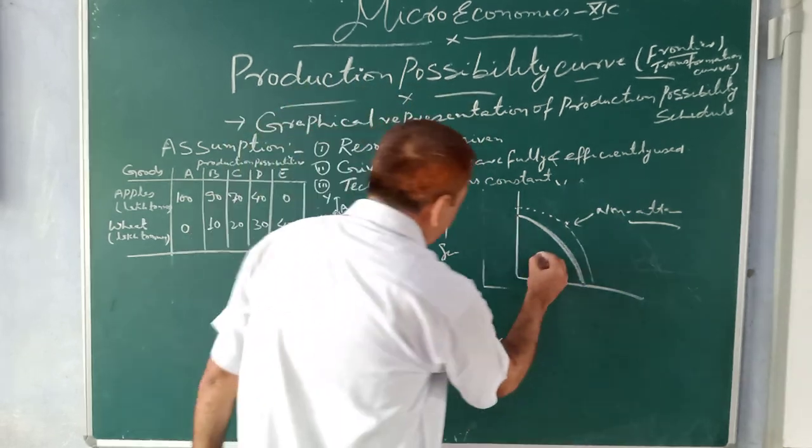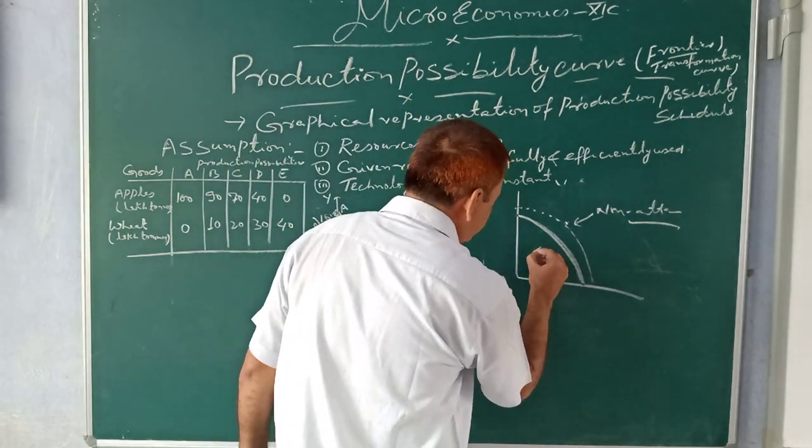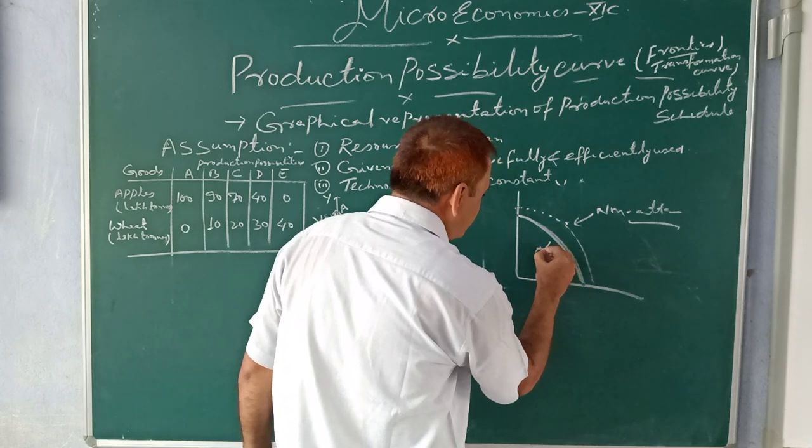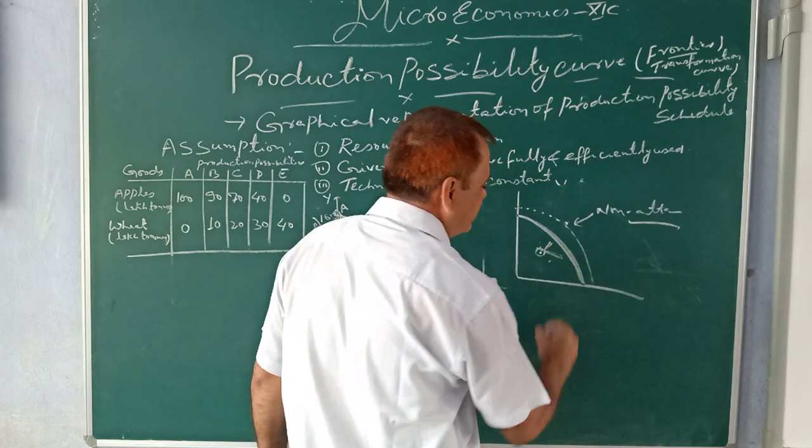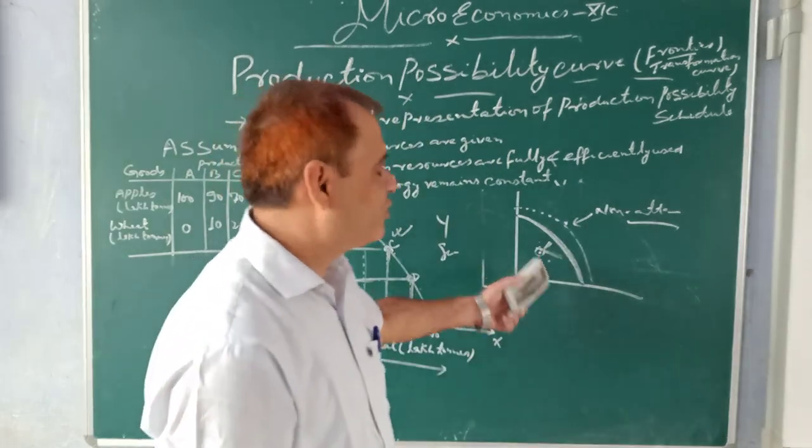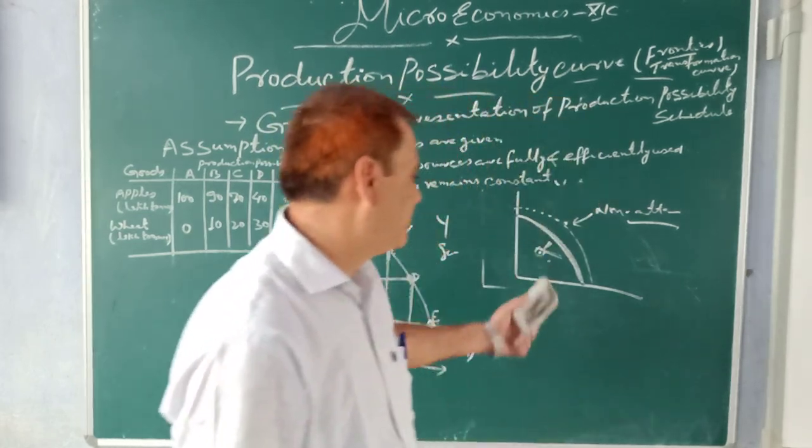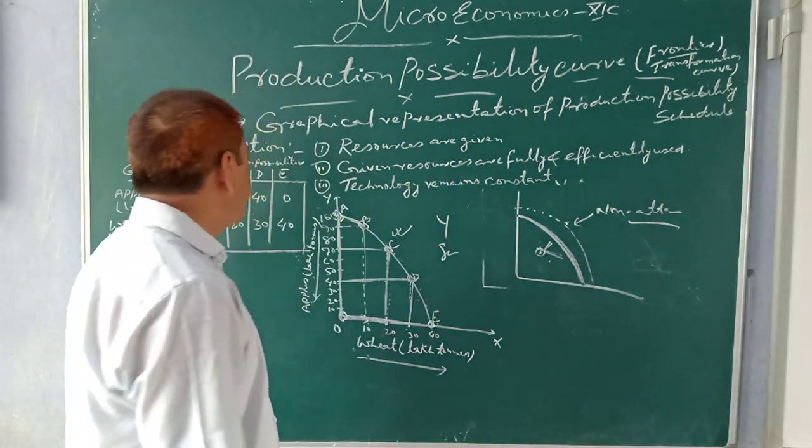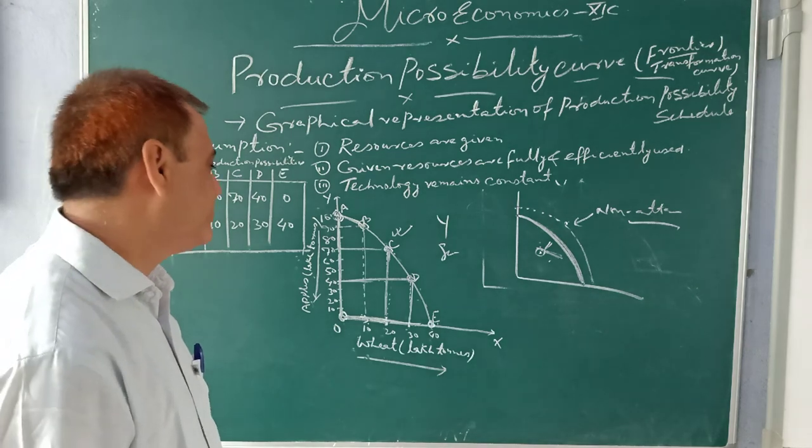If we are producing here inside the curve, that means under-utilization. We are doing under-utilization - whatever resources we have, we are not using fully and efficiently.